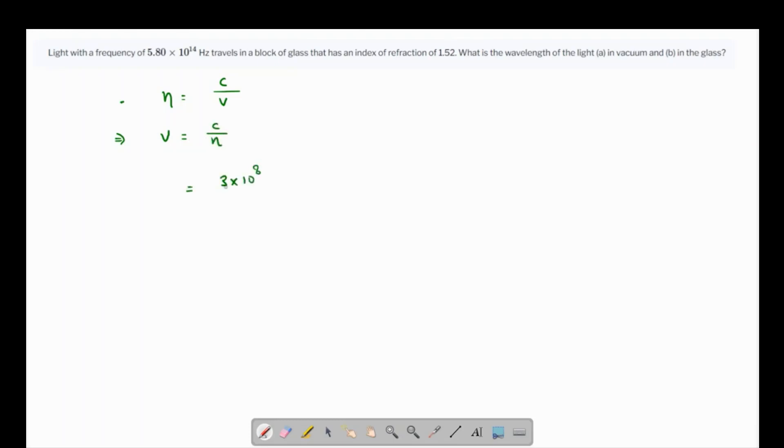c is the speed of light, so that's 3 times 10^8, and n is already given as 1.52. So if you simplify this, 3 over 1.52, we have 1.97. So this is 1.97 times 10^8 meters per second.